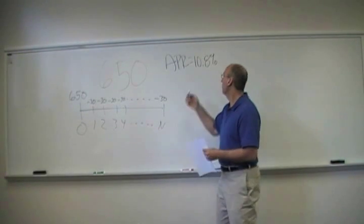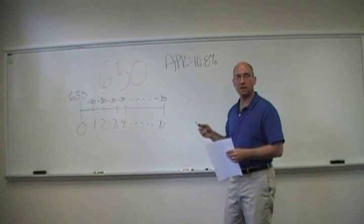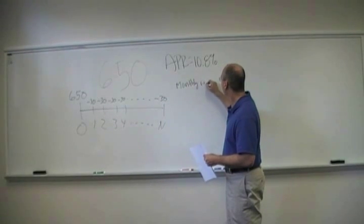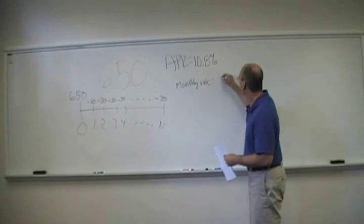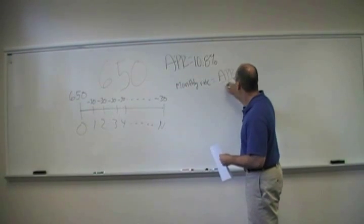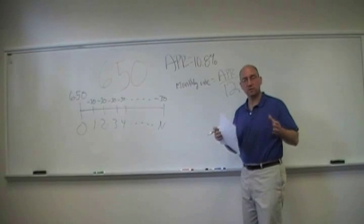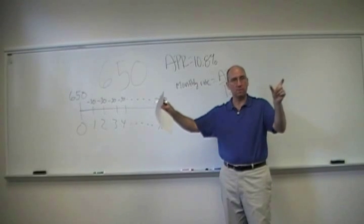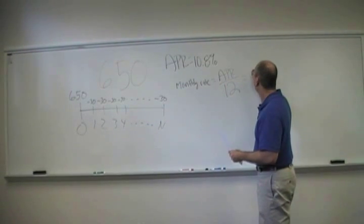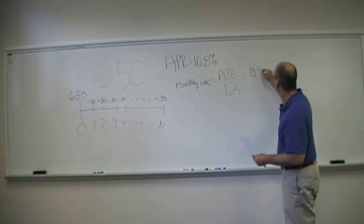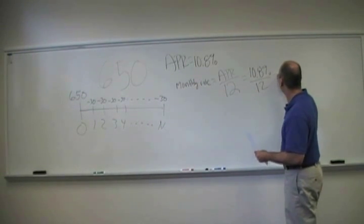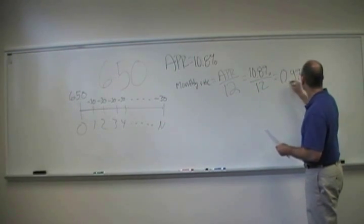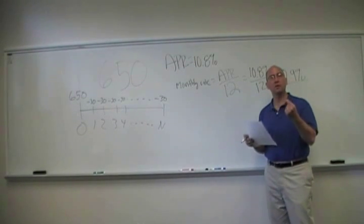So we need a monthly rate. If the APR is 10.8%, the monthly rate is simply equal to the APR over 12 because there are 12 months in a year. So the APR is for the whole year and we want to know what it is for one month. So we just divide through by 12. So 10.8% over 12 is equal to 0.9%. That is the monthly rate on this loan.